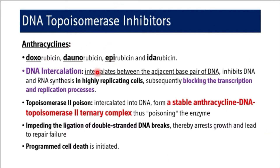The mechanism of action of anthracyclines is basically DNA intercalation — the inhibitor intercalates between the adjacent base pairs of DNA. It inhibits DNA and RNA synthesis in highly replicating cells. These highly replicating cells, which undergo multiplication without restriction, are the actual targets of DNA topoisomerase inhibitors. They subsequently block the transcription and replication process.